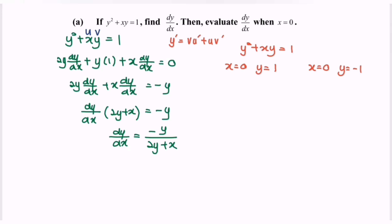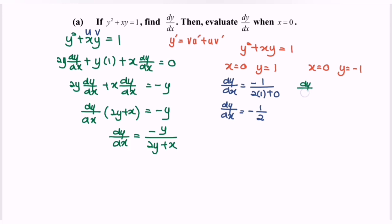We have two sets of values. If x equals 0 and y equals 1, then dy/dx equals negative 1 over (2 times 1 plus 0), so dy/dx equals negative 1 over 2. For x equals 0 and y equals negative 1, dy/dx equals negative(negative 1) over (2 times negative 1 plus 0), which also gives dy/dx equals negative 1 over 2.